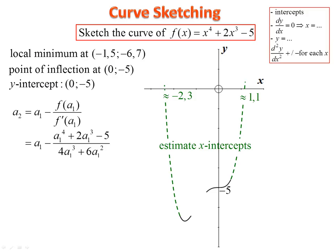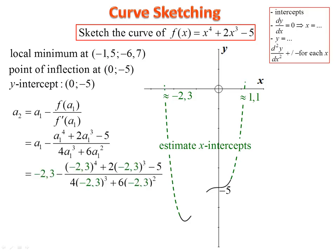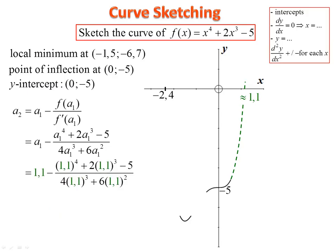Into Newton's method: substituting negative 2.3 into the formula gives negative 2.4. Substituting negative 2.4 back gives negative 2.4 again — confirmed. Now substitute 1.1: we get 1.2. Substituting 1.2 gives 1.2 again — confirmed. So our x-intercepts are at negative 2.4 and 1.2. We are ready for our curve.